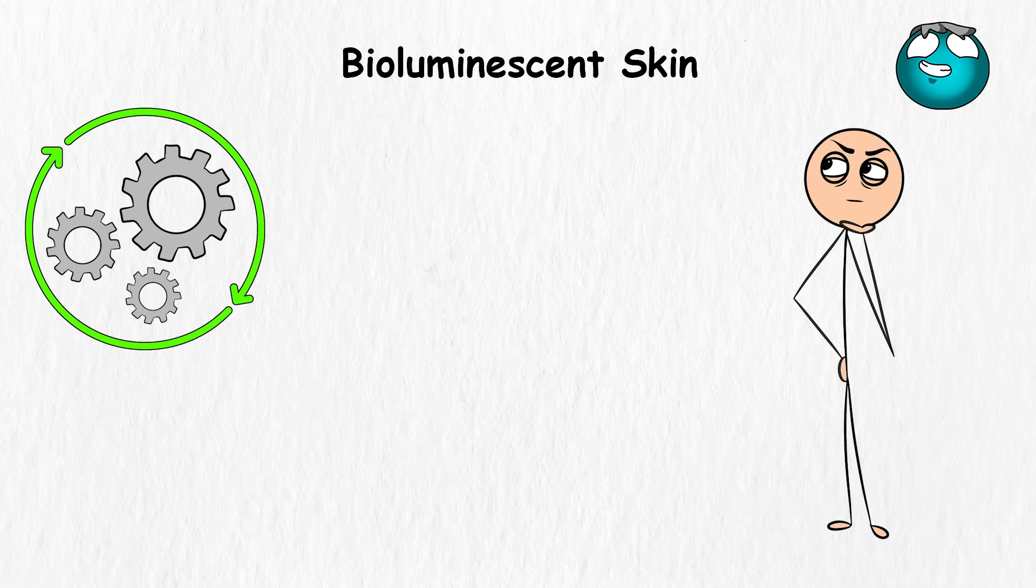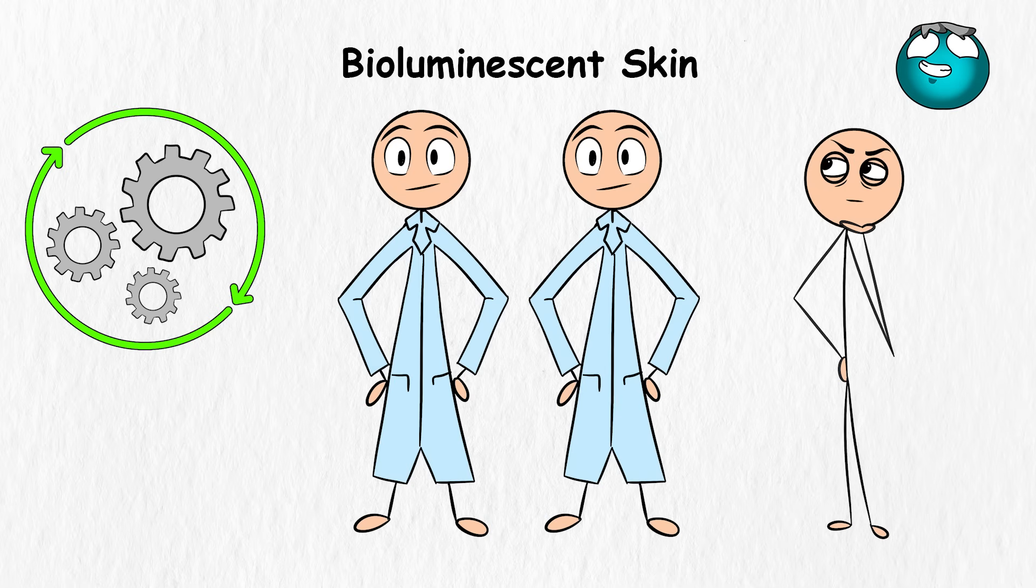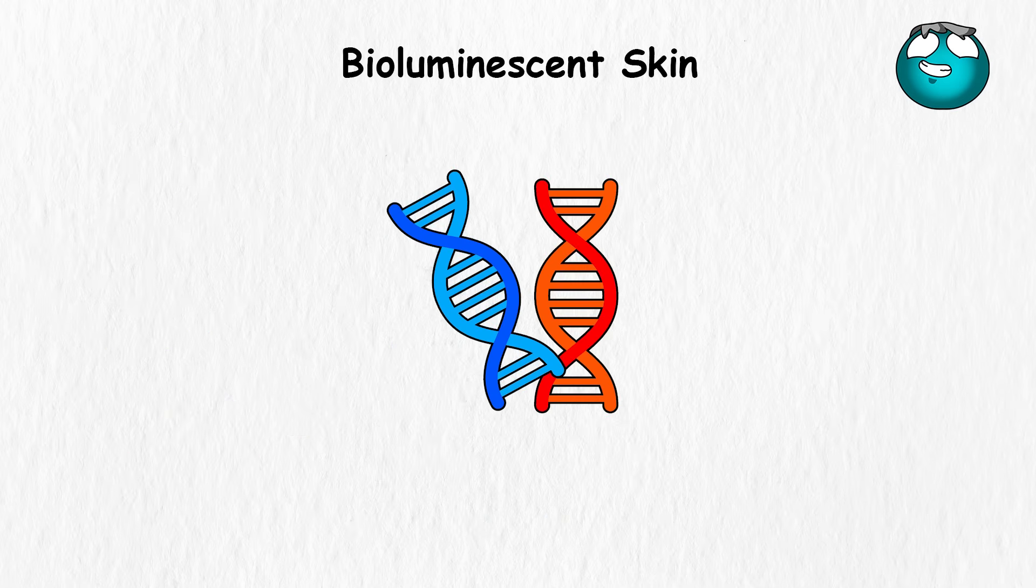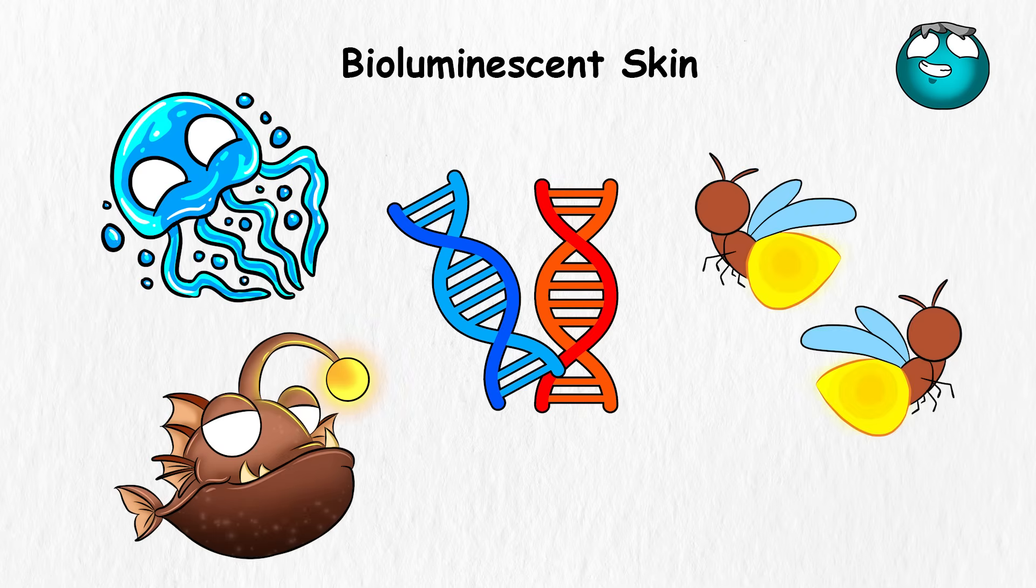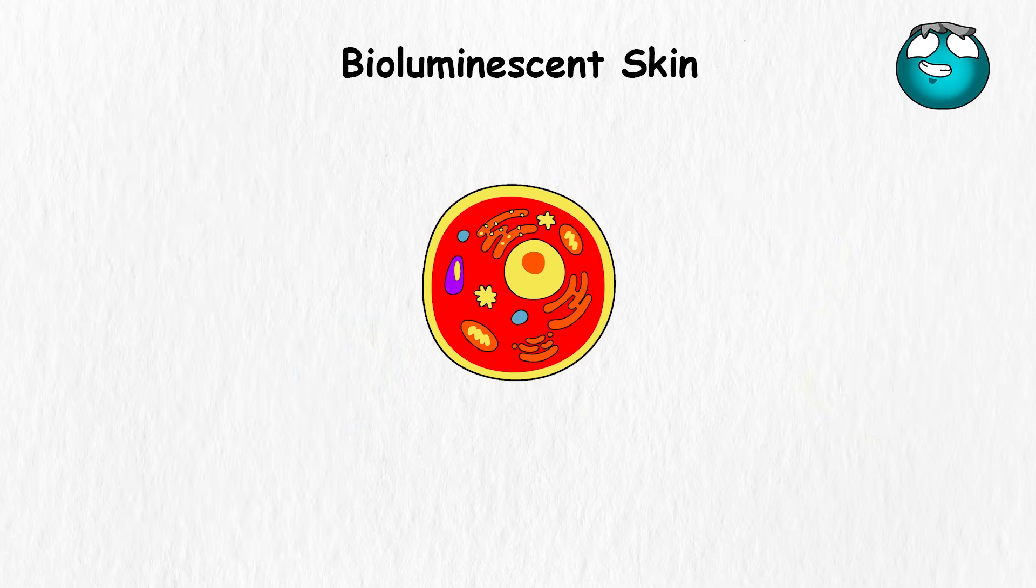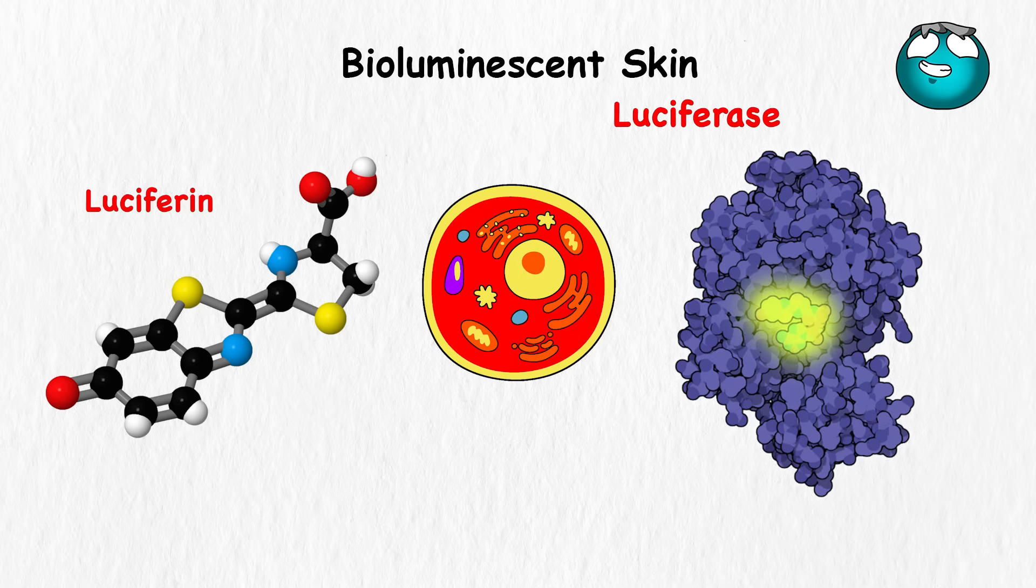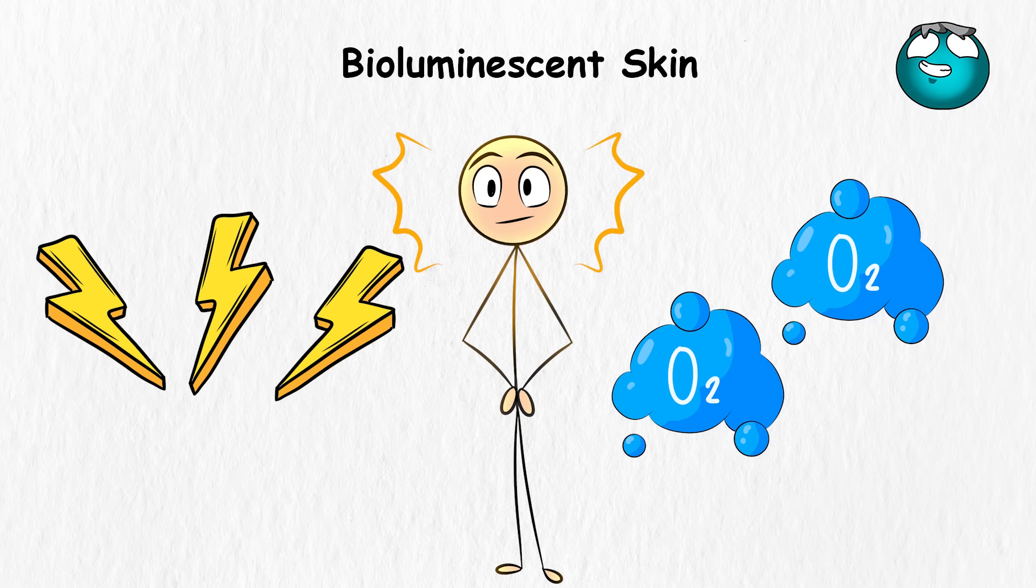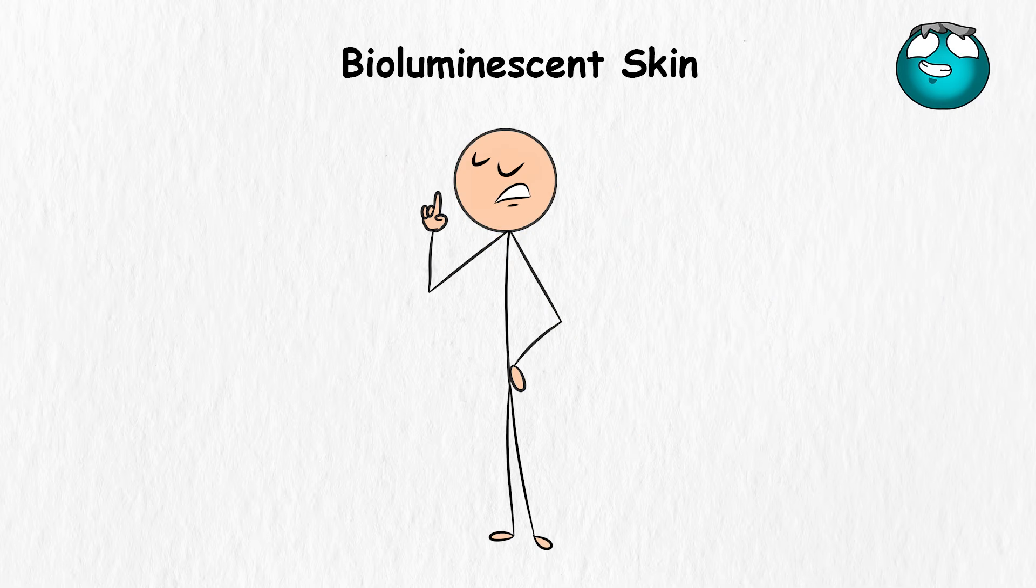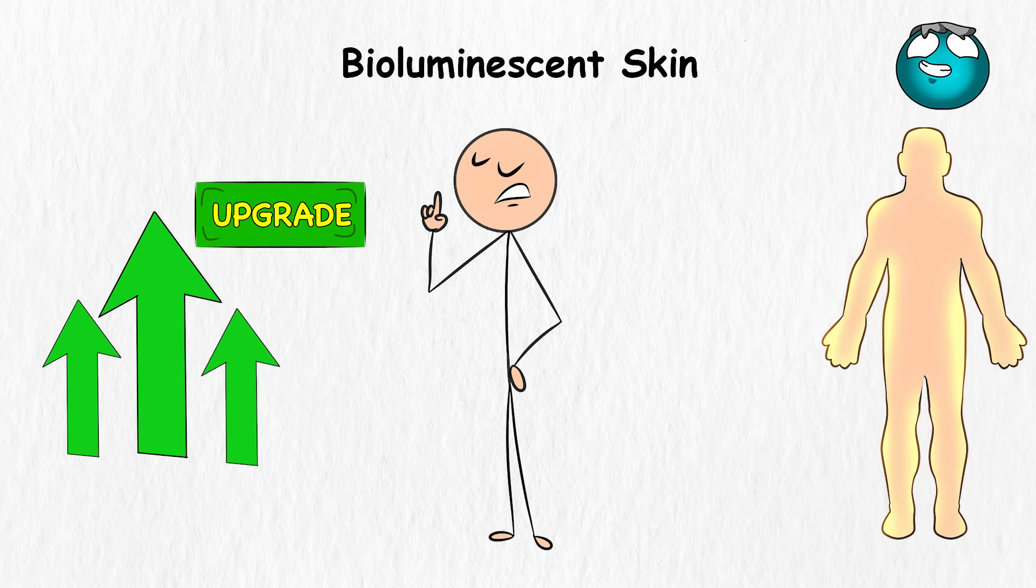You're probably wondering how this could even work, but with the current level of technological advancement, scientists could actually tweak our DNA using bioengineering techniques to borrow genes from bioluminescent creatures like fireflies, anglerfish, or certain jellyfish. Your cells would house little light factories called luciferase and luciferin, the proteins responsible for making things glow, and with the right mix of oxygen and energy, your skin could emit light. Apart from the fact that being able to produce light directly from your skin would be a very cool upgrade.